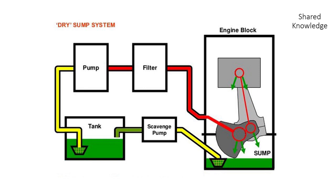In this system we have two major components: the scavenge pump and the pressure pump. You will see that the oil level in the crankcase is actually low. The oil sump pan is shallower compared to that of the wet sump, which we'll look at later.